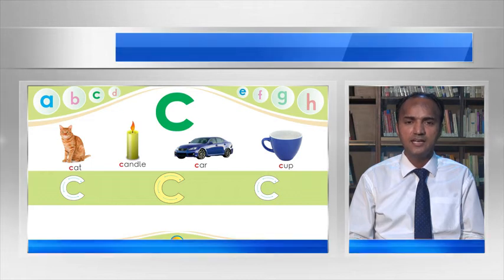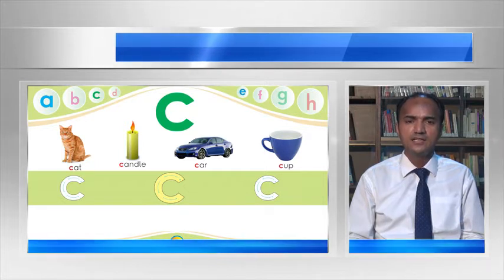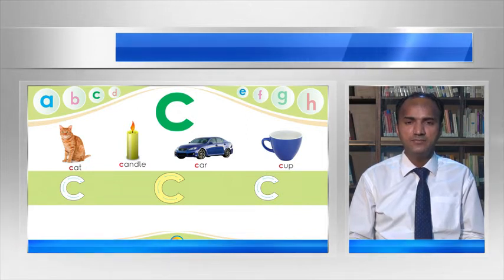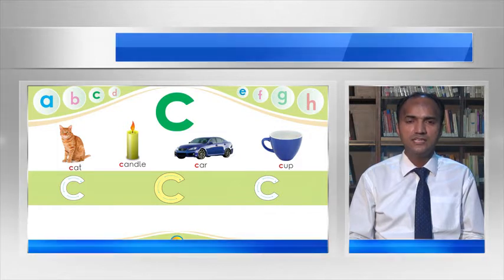Cat. Candle. Car. Cup. Listen again children: Cat, Candle, Car, Cup. After speaking the vocabulary five times in front of the children, the teacher will ask the children to say the names of the vocabulary five times.